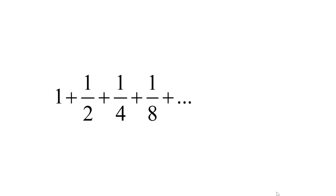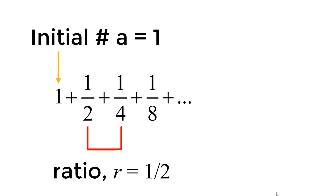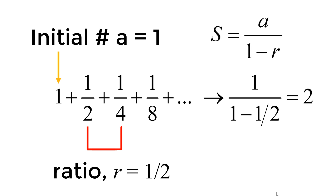Let's quickly solve an example. We have 1 + 1/2 + 1/4 + 1/8 and so on. To calculate the sum, we identify the first term a = 1 and the ratio r = 1/2. Thus, the sum of the infinite geometric series is 1 / (1 − 1/2) = 2.